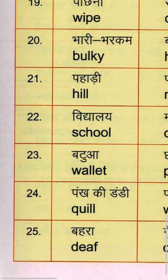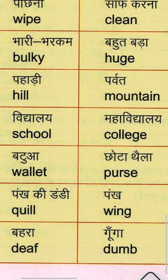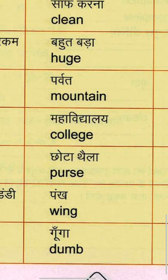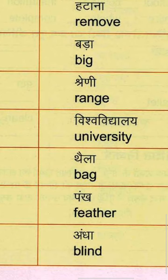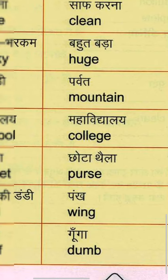Twentieth group: Bhari-bharkam, something very heavy, is called Bulky — B-U-L-K-Y. Bahut bada means Huge — H-U-G-E. And Bada means Big — B-I-G.